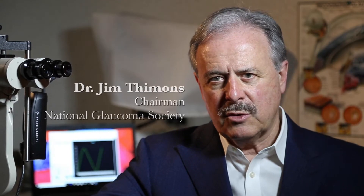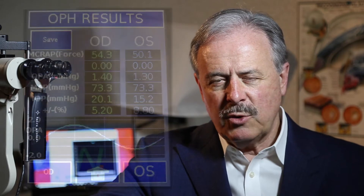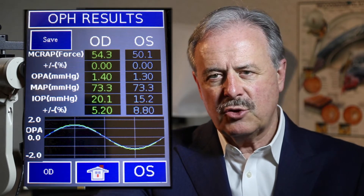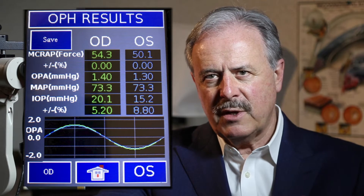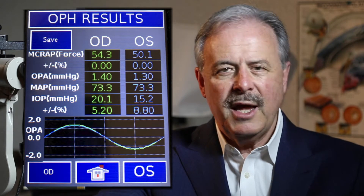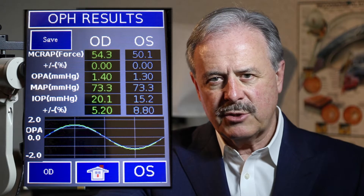Ophthalmodynamometry has an additional very interesting capacity beyond the obvious ability to measure the rate of flow into the central retinal artery, and thus the perfusion of the posterior pole of the eye. When you look at that measurement, the derivation of it comes from the differentiation between the brachial artery blood pressure and the central retinal artery blood pressure.